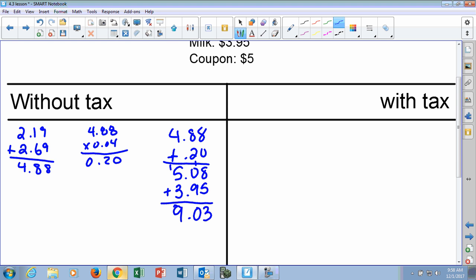So at $9.03, that's our total. Well, there's something else: the coupon. You got to subtract it, right, because we save that money. So now that comes off our total. Subtract $5, and you get... how many people got $4.03 as a total? Excellent.